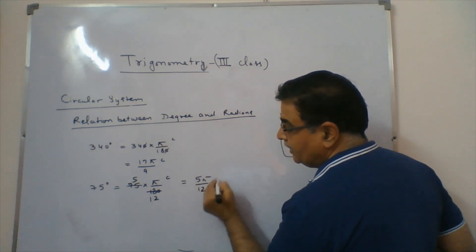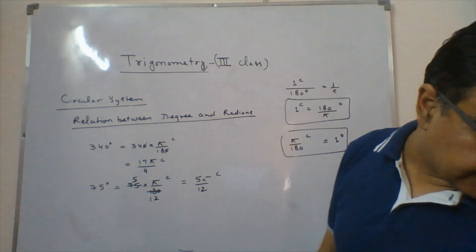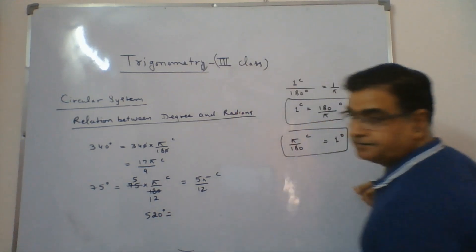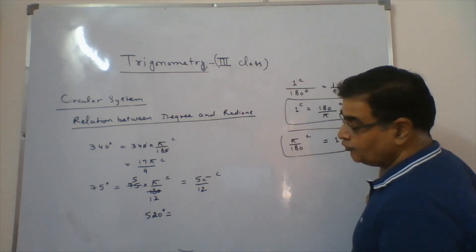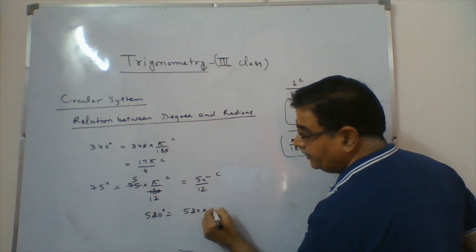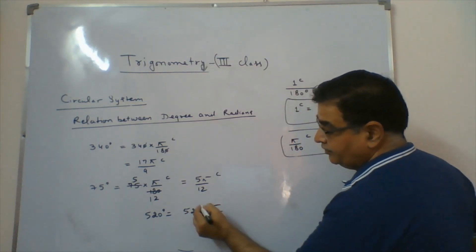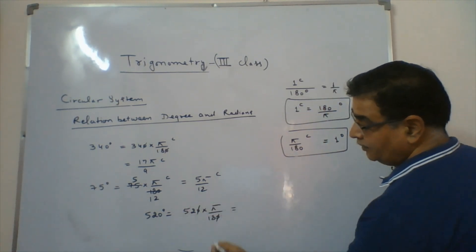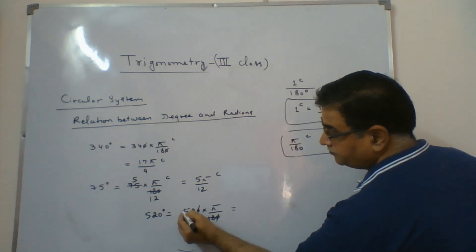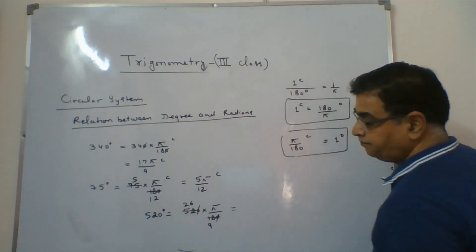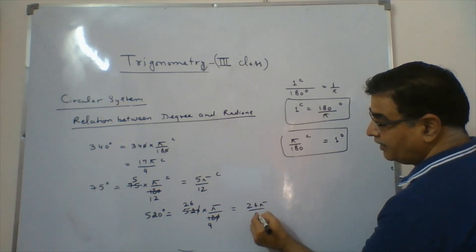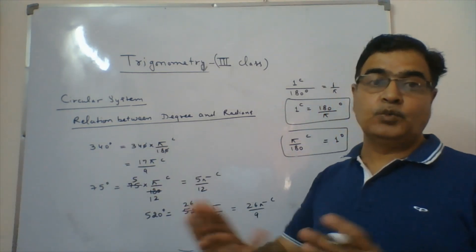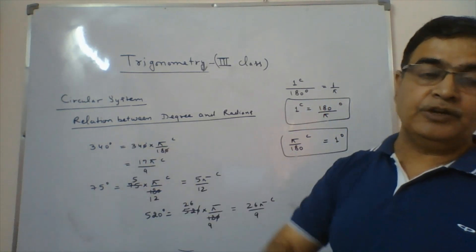For 520 degrees: 520 × π/180 — cancel common factors, 2 cancels, leaving 26π/9. So 520 degrees equals 26π/9 radians. Any angle given in degrees you can convert to radians this way; similarly, radians can be converted to degrees.